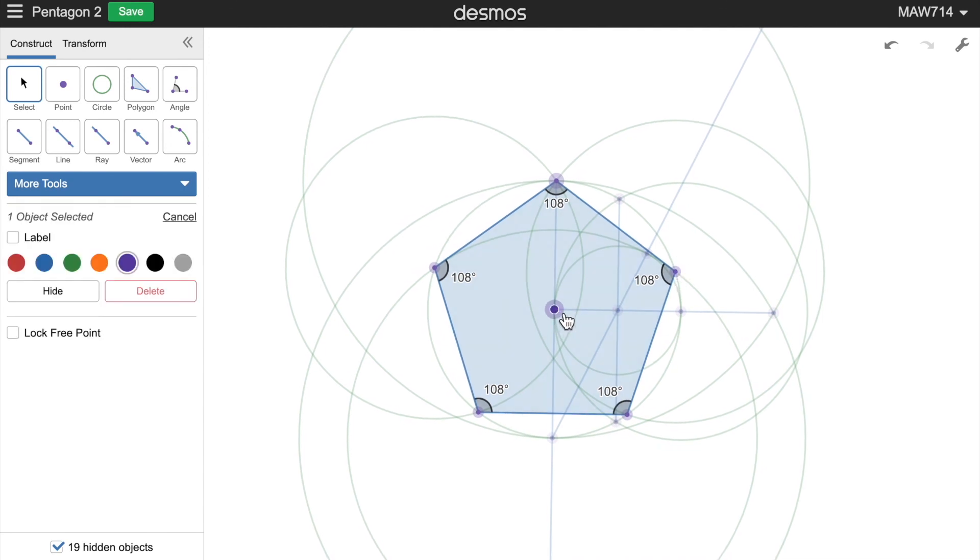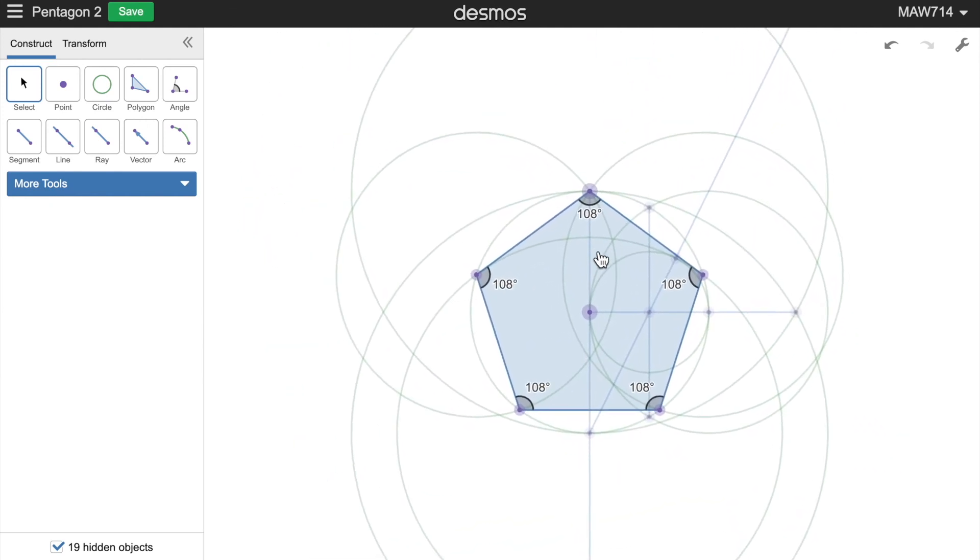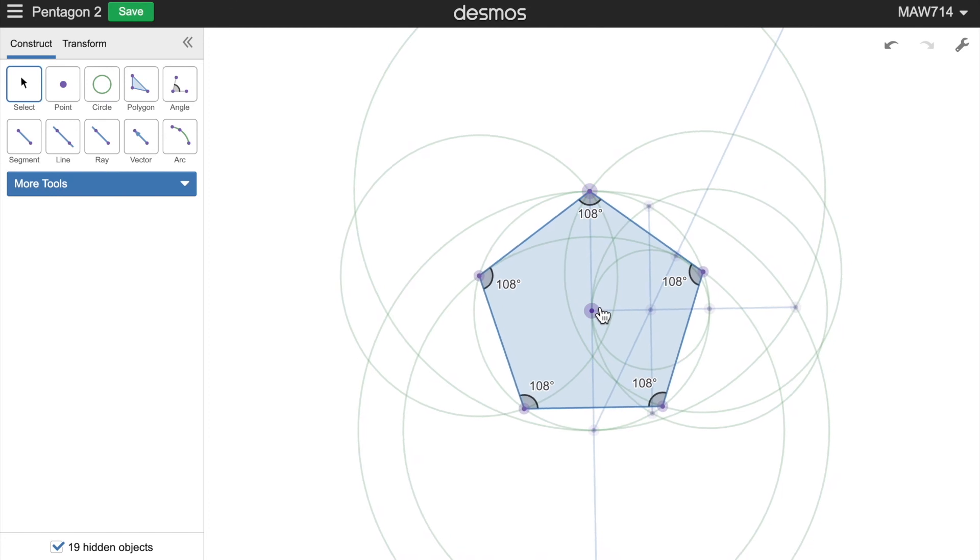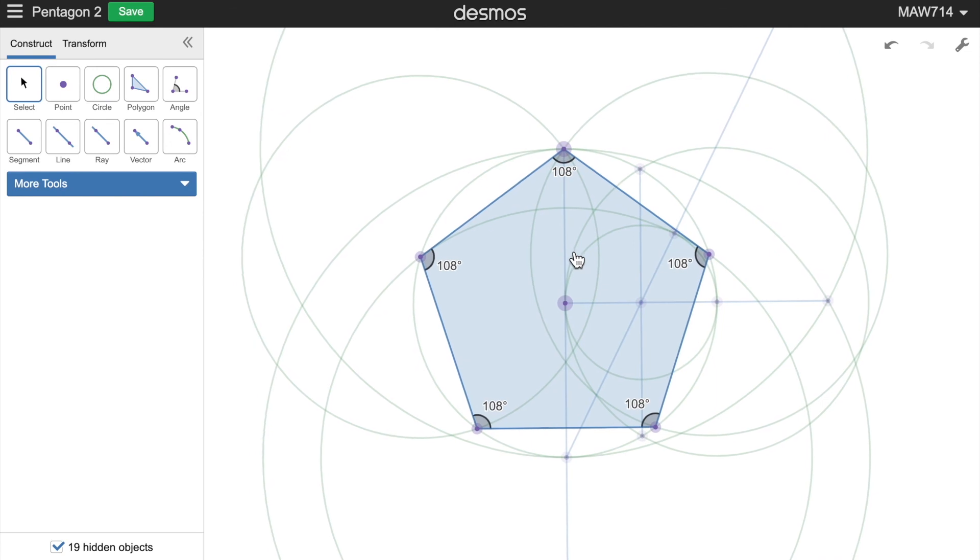Note that I left this point here unhidden. That way we can still move this pentagon around with this point and you can clearly see the center point of this pentagon. Which can be nice.